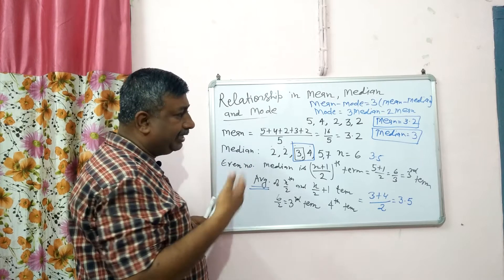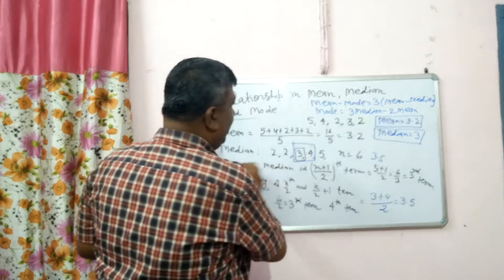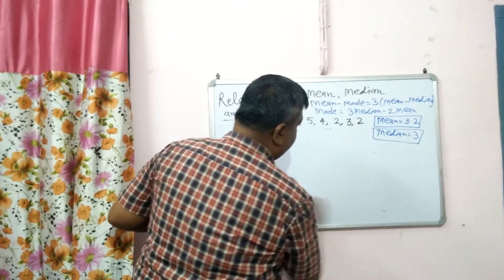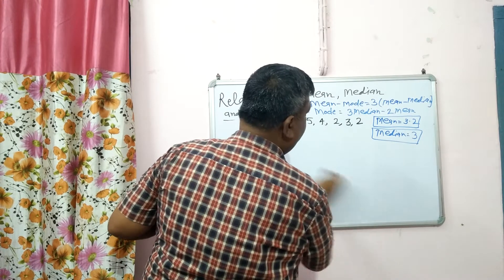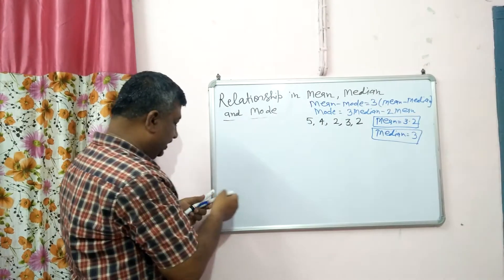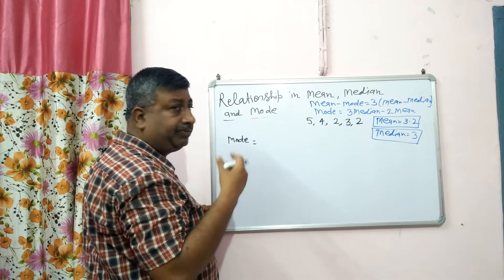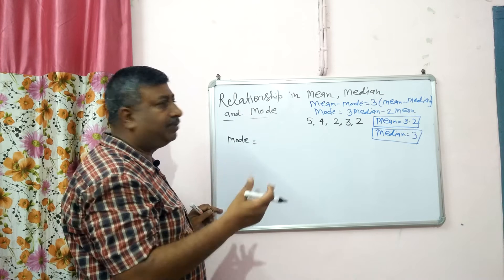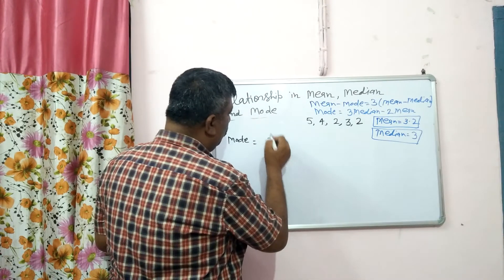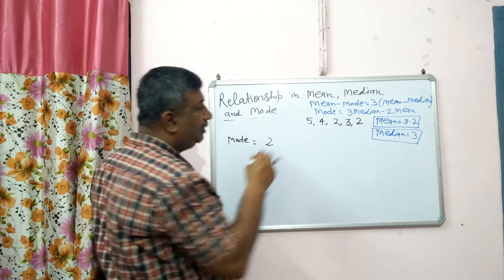So if data is even or odd, the calculation is different. Now for our original data 5, 4, 2, 3, 2: mean is 3.2, median is 3, and mode — mode is 2 because it occurs maximum times. 5 occurs once, 4 once, 2 occurs twice, and 3 once. So mode is 2.